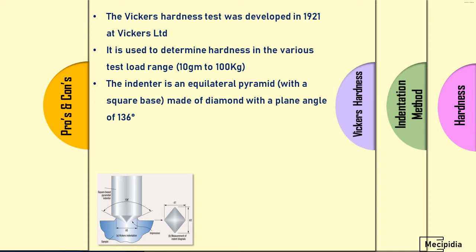One great advantage of this method is that the indenter is an equilateral pyramid diamond, cone-shaped at the bottom with a 136-degree angle. As you can see in the image below, the indentation will be in a square shape. Measuring the square shape diagonals D1 and D2 is very easy compared to Brinell and other hardness methods where a ball is used and measuring the circular indentation diameter can create some confusion. Here the measurement is very accurate and will not lead to any error.